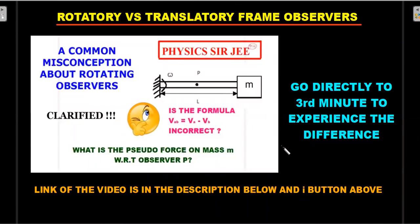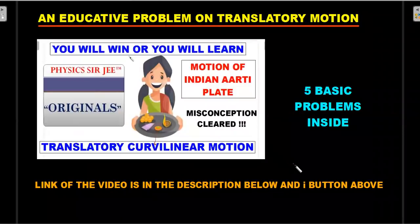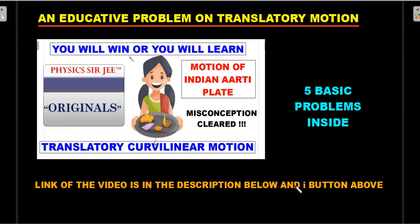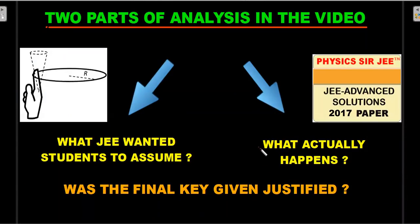There's also a recent video where an educative problem on translatory curvilinear motion was done with five basic problems — a must for JEE aspirants. Please check out the links in the i-button and the description below. Once that's done, this video will have two parts of analysis: first, what JEE wanted students to assume, and second, what actually happens and what the real physics behind this situation is — similar to hula hoop rotation.